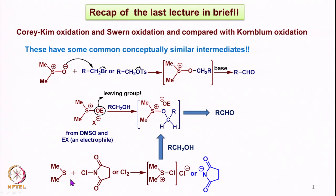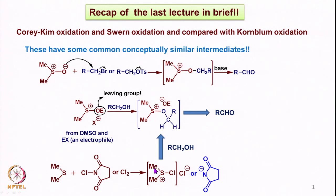In Corey-Kim oxidation, dimethyl sulfide reacted with N-chlorosuccinimide or chlorine leads to an intermediate we can compare with the sulfonium type intermediate. We have a leaving group on sulfur — here from dimethyl sulfide rather than DMSO. This reacts with alcohol to form an intermediate similar to the Kornblum oxidation type, giving aldehydes via conceptually similar sulfonium salts.